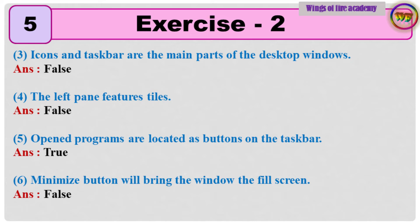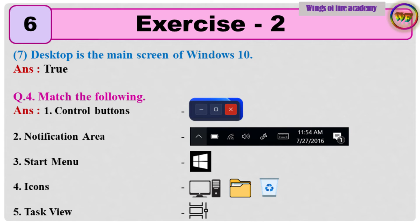5. Open programs are located as buttons on the taskbar. Answer: True. 6. Minimize button will bring the window to fill screen. Answer: False. 7. Desktop is the main screen of Windows 10. Answer: True.